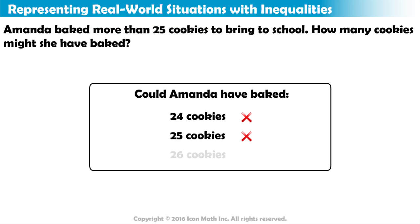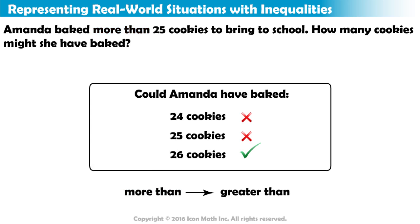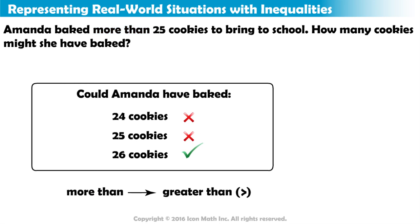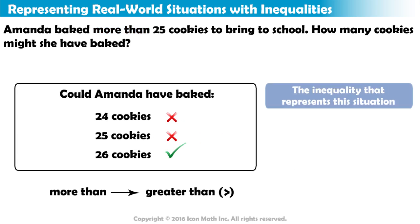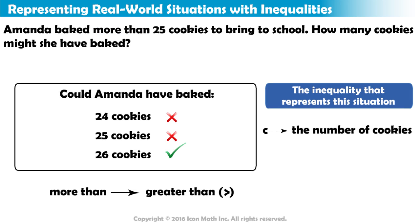Could she have baked 26 cookies? Yes. The word 'more than' means greater than, so we will use a greater than symbol to represent this situation as an inequality. If C equals the number of cookies Amanda baked, then C is greater than 25.